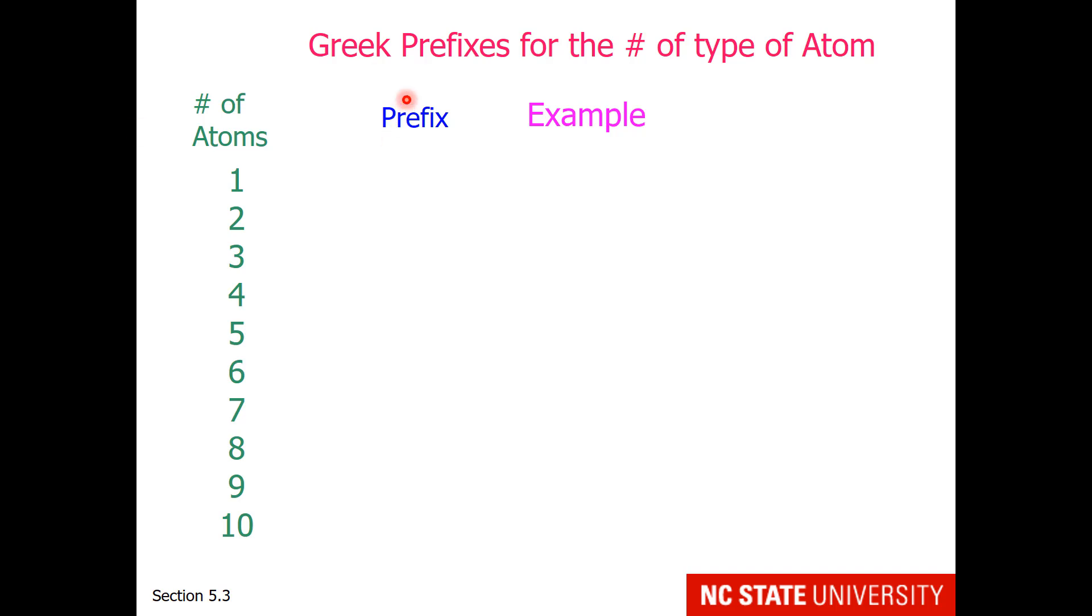So what are these prefixes? Well, they're derived from the Greek language. Many of them you probably already know. Mono stands for one, and surely you've heard of carbon monoxide. Di is for two atoms, carbon dioxide. Tri, this would be like a triangle, so three sides, three atoms. So how about phosphorus trichloride?